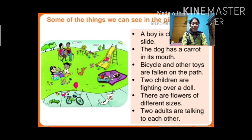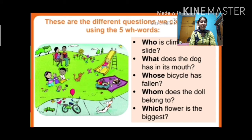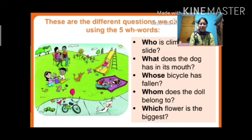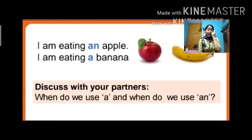We can make different questions using five WH words. For example: Who is climbing the slide? What does the dog have in its mouth? Whose bicycle has fallen? Whom does the doll belong to? Which flower is the biggest? We can frame questions using WH words.